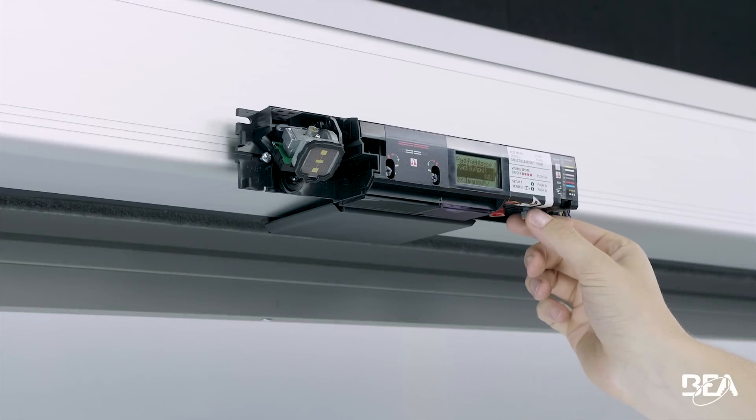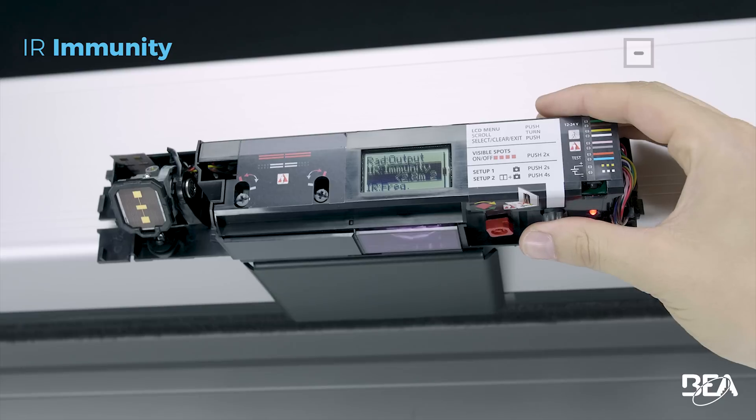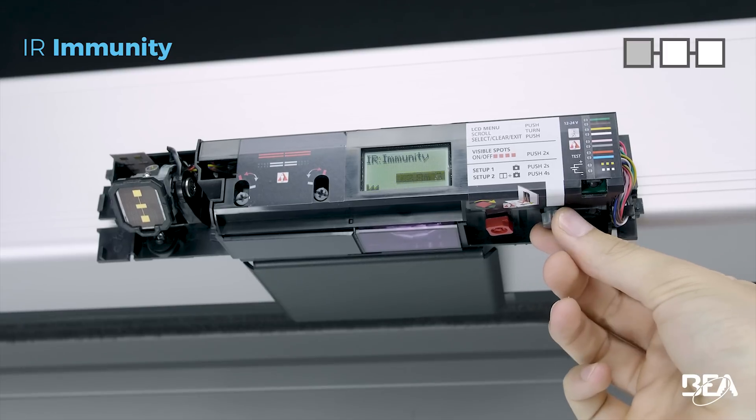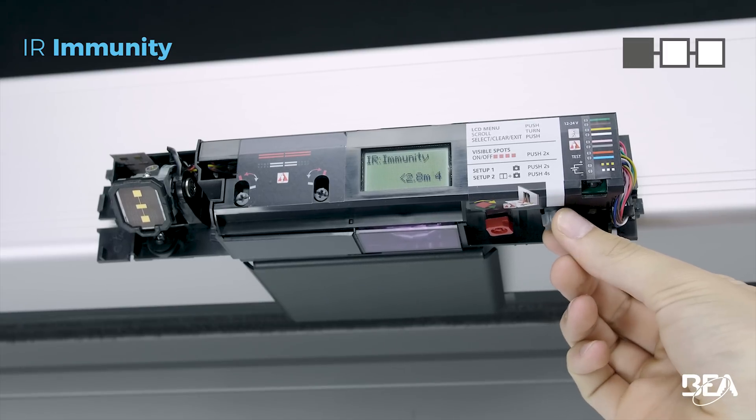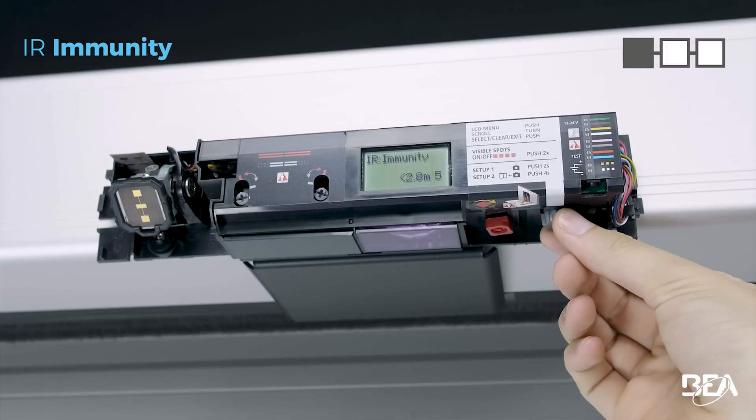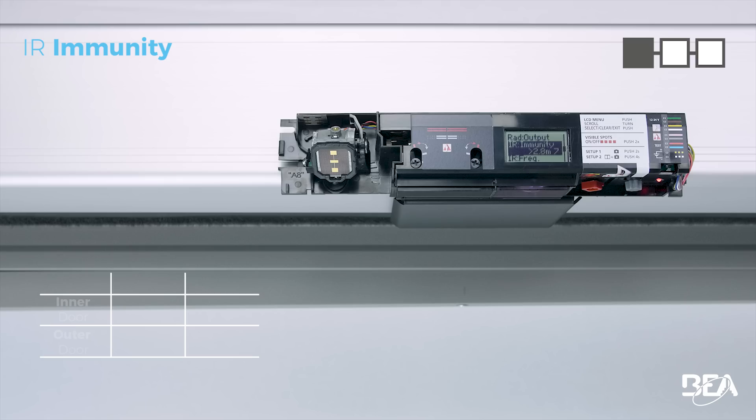In the first menu, you can adjust the infrared immunity according to the mounting height and the environment. When the sensor is installed below 2.8 meters, choose value 2 on inner doors and value 3 on outer doors. For an installation higher than 2.8 meters, choose values 6 or 7, respectively.